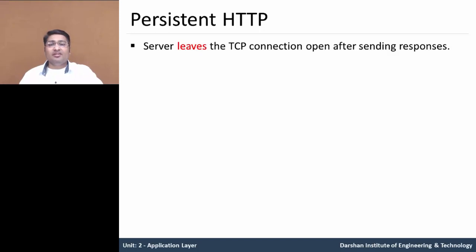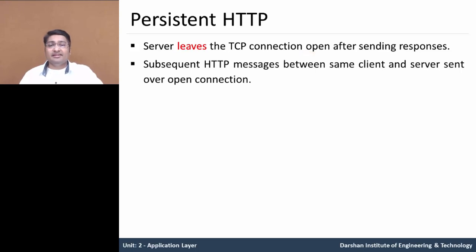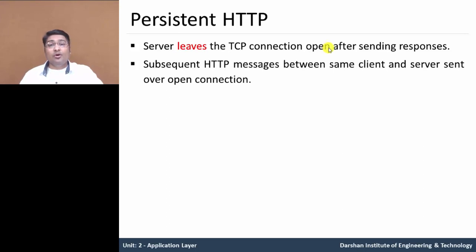In persistent HTTP, the server leaves the TCP connection open after sending a response object — it does not close the connection, but keeps the TCP connection open. Subsequent HTTP messages between the same client and server are sent over that open connection. For example, with 11 objects — one HTML file and 10 JPG files — each object does not create a separate TCP connection. On the same TCP connection, it requests and receives all the objects because the connection remains open.